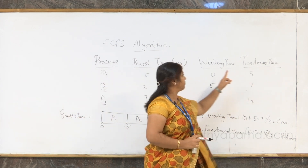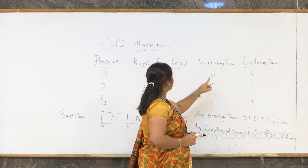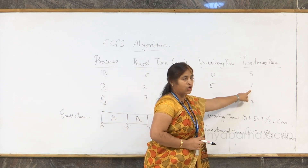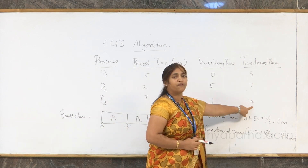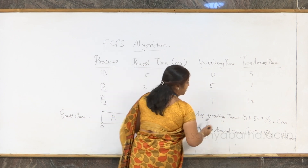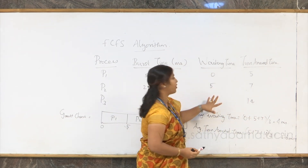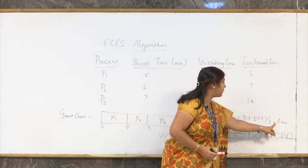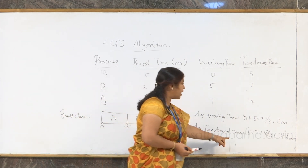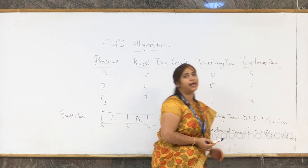Now we calculate turnaround time, which is the summation of burst time and waiting time. So 5 plus 0 equals 5 milliseconds for P1; 2 plus 5 equals 7 milliseconds for P2; 7 plus 7 equals 14 milliseconds for P3. The average waiting time is 0 plus 5 plus 7 divided by 3, which equals 4 milliseconds. Average turnaround time is approximately 8.6 milliseconds.